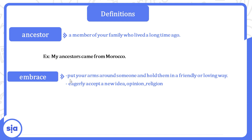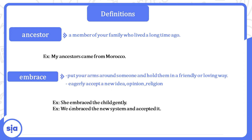'Embrace' has two meanings. First: to put your arms around someone and hold them in a friendly or loving way — يعانق أو يحضن. Second: to eagerly accept a new idea, opinion, or religion — يعتنق فكرة أو رأي أو دين. Example 1: She embraced the child gently. Example 2: We embraced the new system and accepted it — النظام الجديد إحنا تقبلناه.